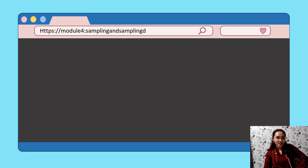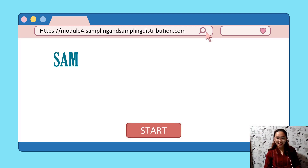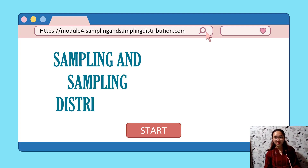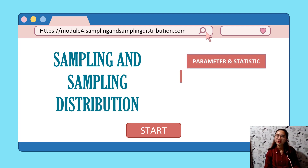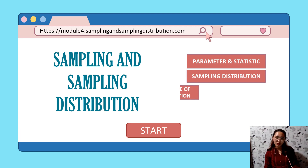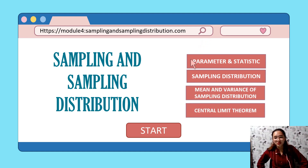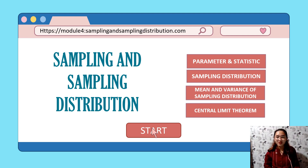Hi everyone, it's Teacher Will and welcome back to our Statistics and Probability subject. This is the fourth video of Module 4: Sampling and Sampling Distribution. Today we will learn about the Central Limit Theorem, one of the fundamental theorems of probability. We will discuss the theorem, which tells about the shape of the distribution of the sample mean when the sample size is sufficiently large.